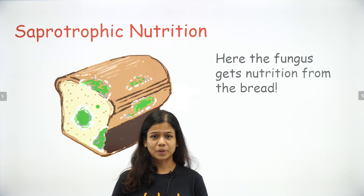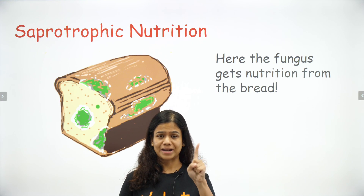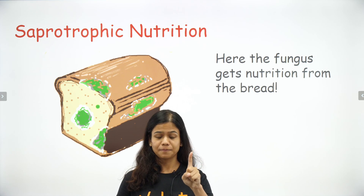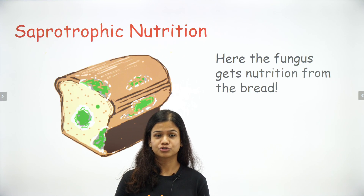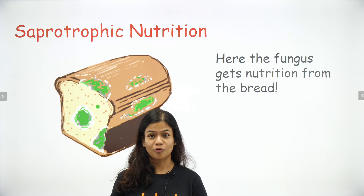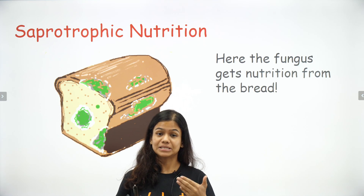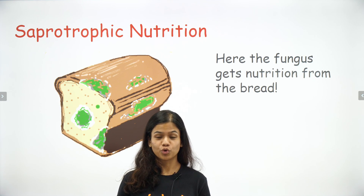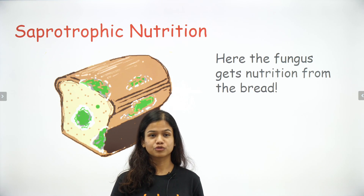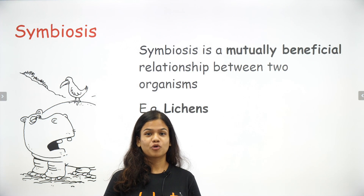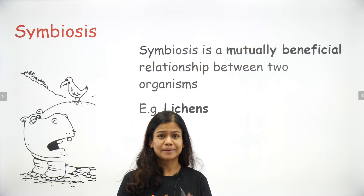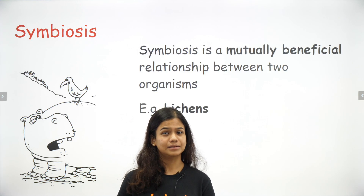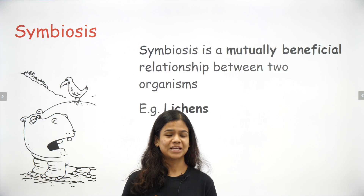Let's recap what we've quickly done. We've covered parasitic nutrition, insectivorous mode of nutrition, and saprotrophic nutrition. Now let's try to understand two concepts present in the book that you should ideally know about.